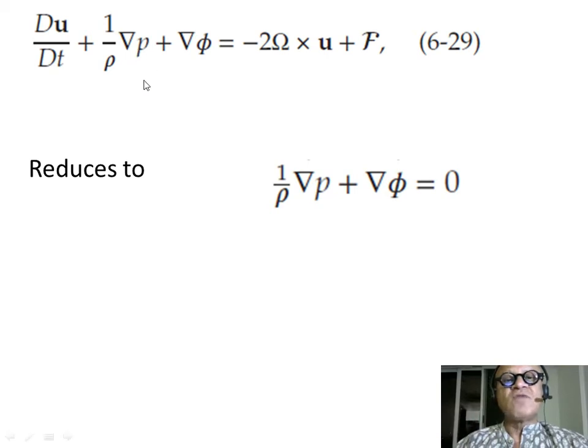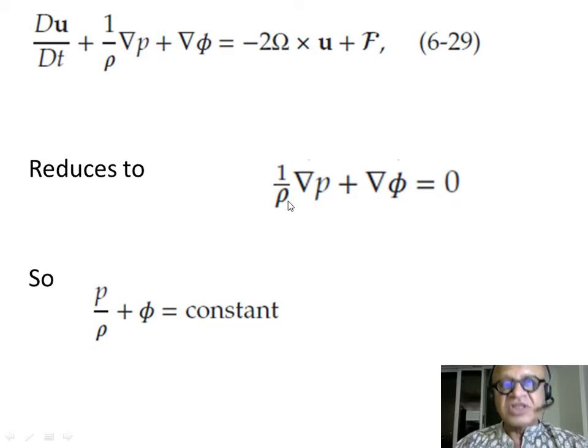So, we just have 1 over rho grad P plus grad phi equals zero, which means you can reduce this to P over rho plus phi equals zero. It's an incompressible fluid, so rho is constant, so we can easily do that.